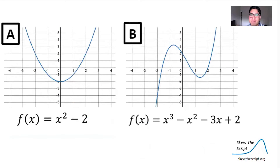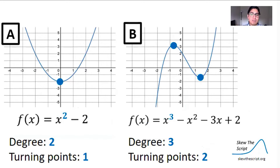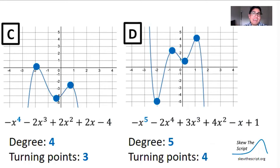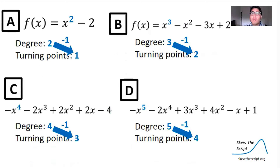So back to a and b — let's check the degrees and compare them to the number of turning points. When we have a degree-2 polynomial, we have one turning point. When our polynomial has degree 3, we have two turning points. In 1c, degree 4 gives three turning points; in 1d, degree 5 gives four turning points. I'm sensing a pattern: the number of turning points is always one less than the degree of the polynomial.